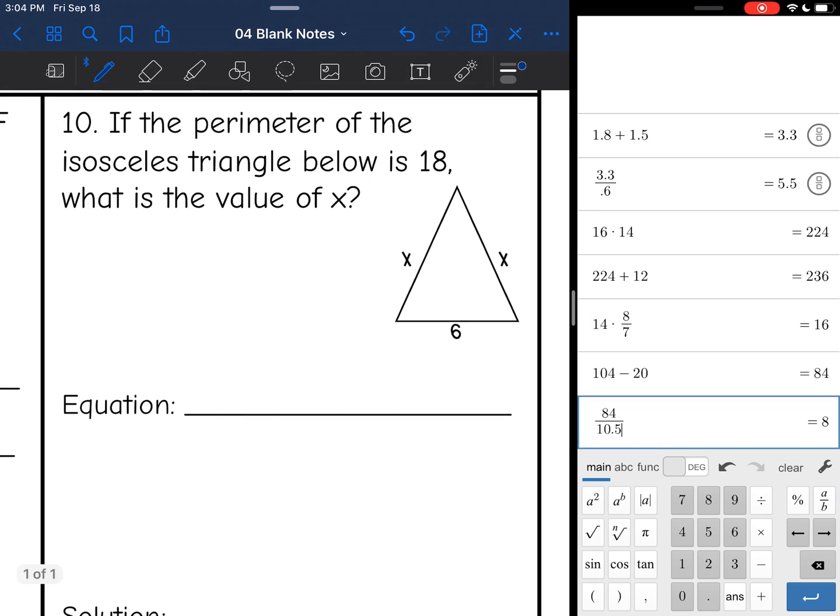Okay, the last one, it says, if the perimeter of the isosceles triangle below is 18, what is the value of x? So perimeter is around the triangle. I have 2x's and a 6. So the way I can write the perimeter is 2x plus 6, and I know the perimeter is 18. So there's my equation, and now I will be able to use it to find the value of x.